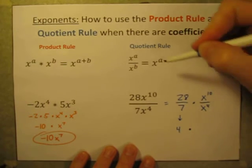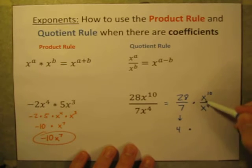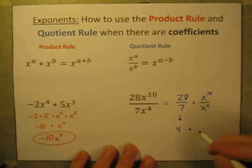And, x to the 10th power divided by x to the 4th power. Here's a case where we can use that simple quotient rule. The bases are both x, we're dividing, so we can just take those exponents, keep the base the same,